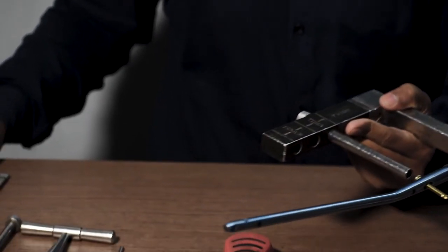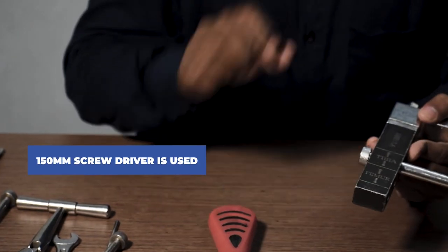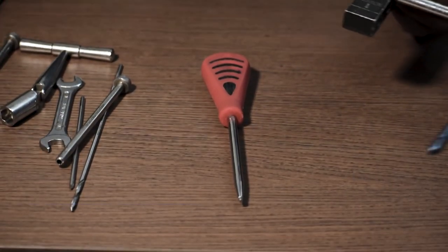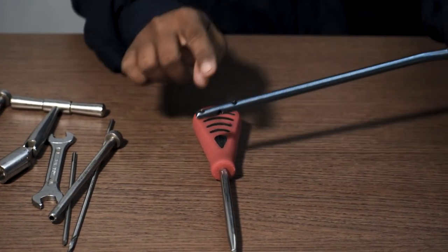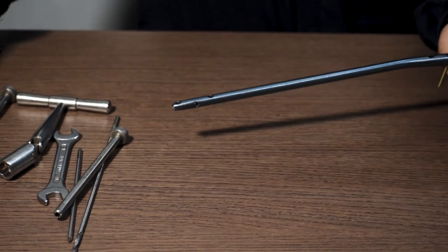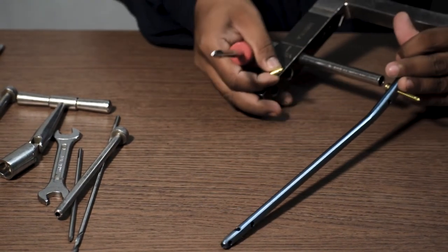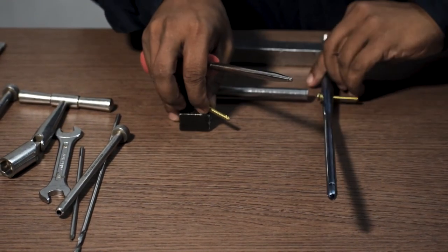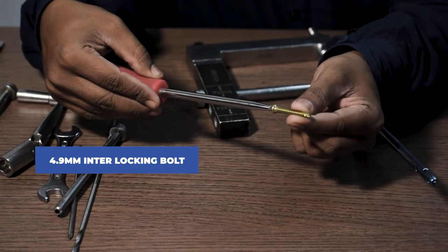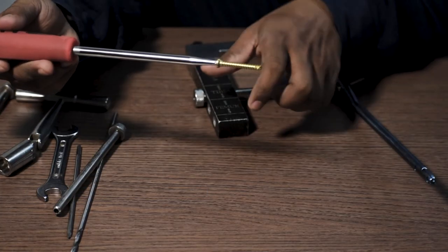In the same way, 150 mm screwdriver is used to fix the interlocking bolt in the distal part of the nail. A 4.9 mm interlocking bolt is used here as well and it is fixed freehand.